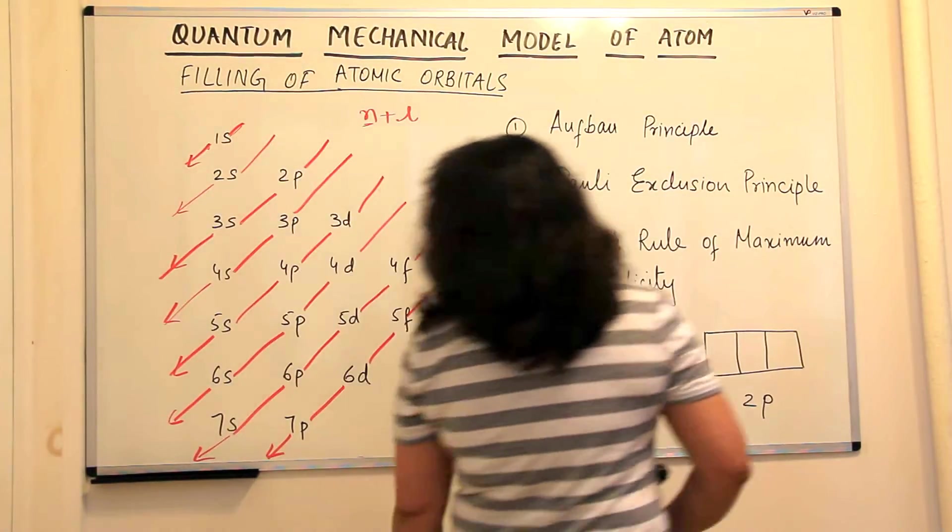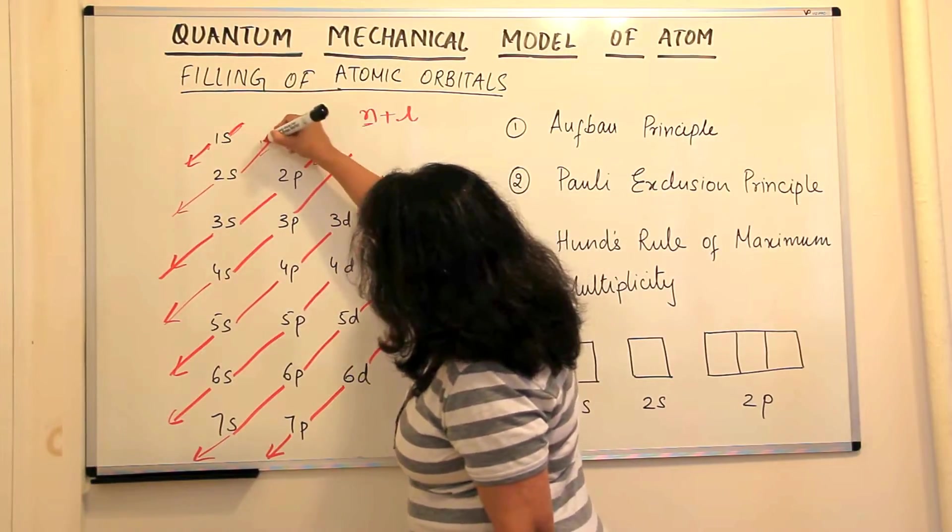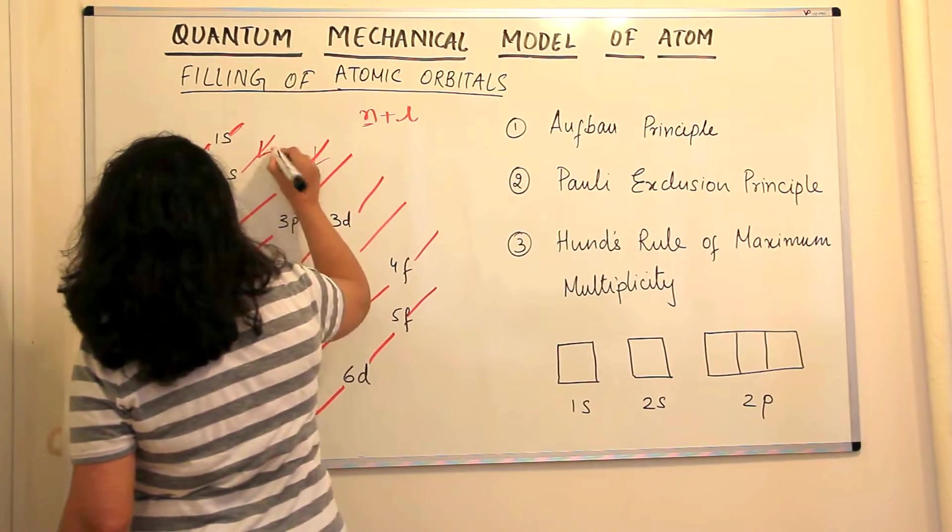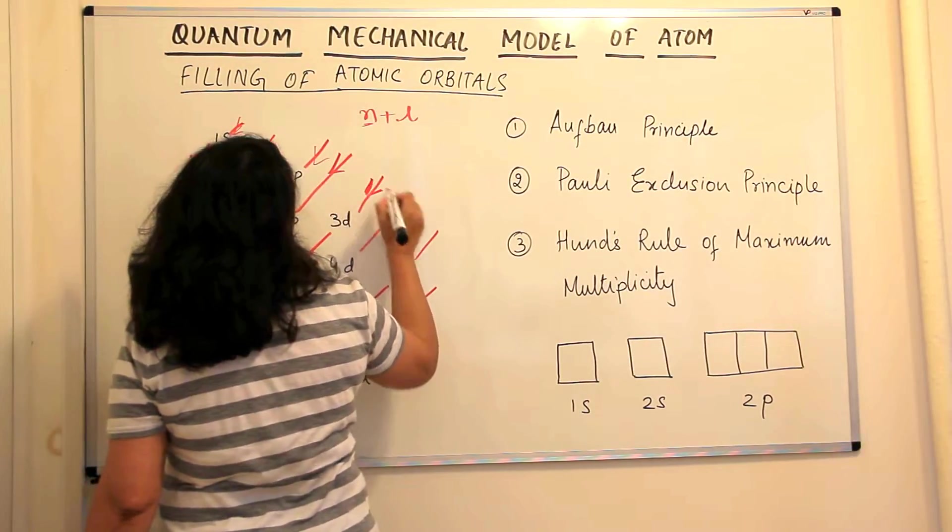So this diagram, if you have all the arrows pointing downwards, going this way, you get the direction of filling up of these orbitals.